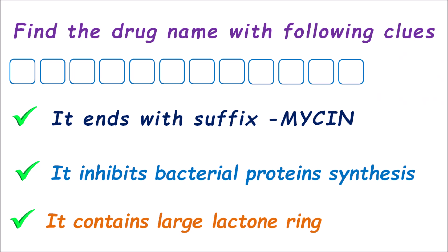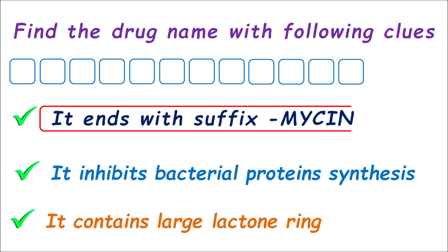Now let us go with the solution for this puzzle. The first clue is that it ends with suffix '-mycin,' so we can simply fill the suffix as '-mycin.' Then we think about the name of this drug. We have to list out the various drugs ending with the suffix '-mycin.' In pharmacology we can find many such antibacterials, and if we list one drug from each category, we have four types.